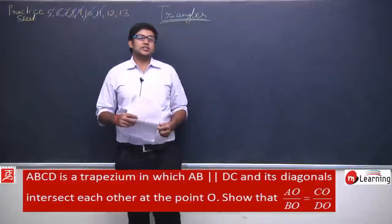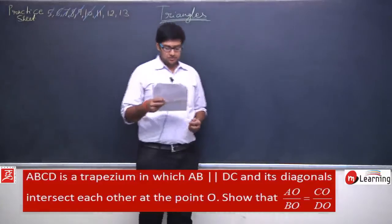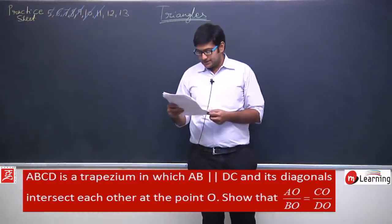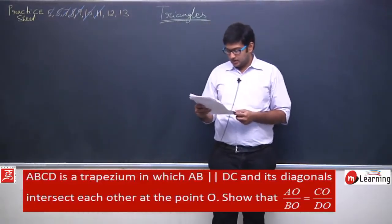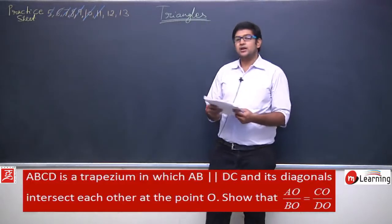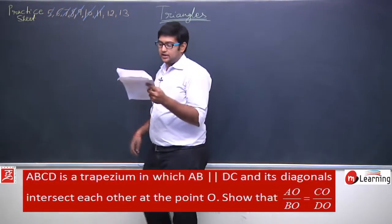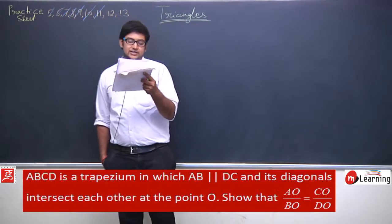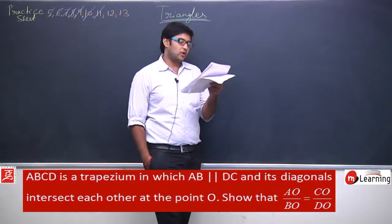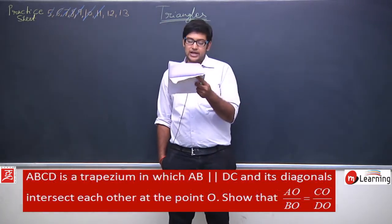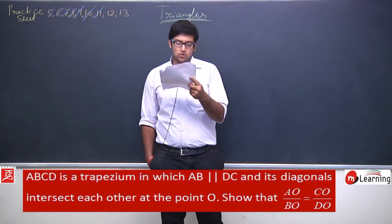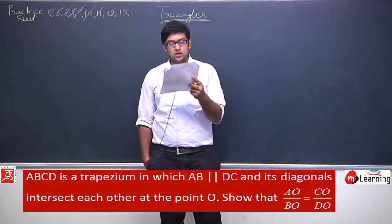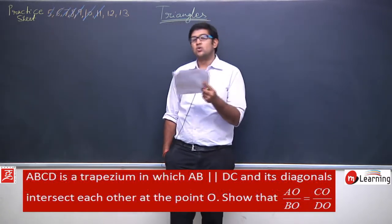Now let us solve question number 12. It says ABCD is a trapezium in which AB is parallel to DC, and its diagonals intersect each other at point O. We need to show that AO upon OB is equal to CO upon DO.